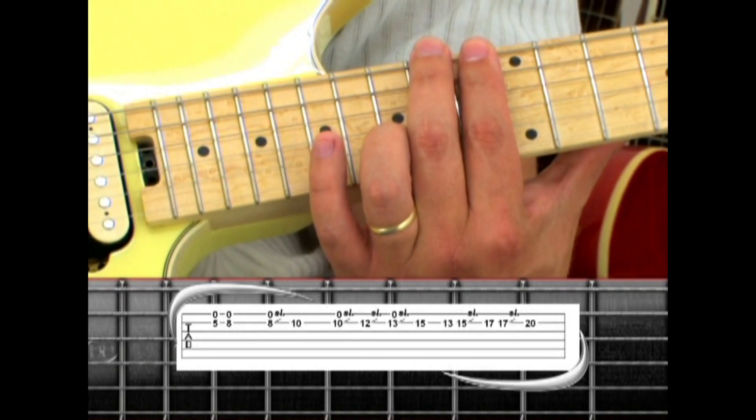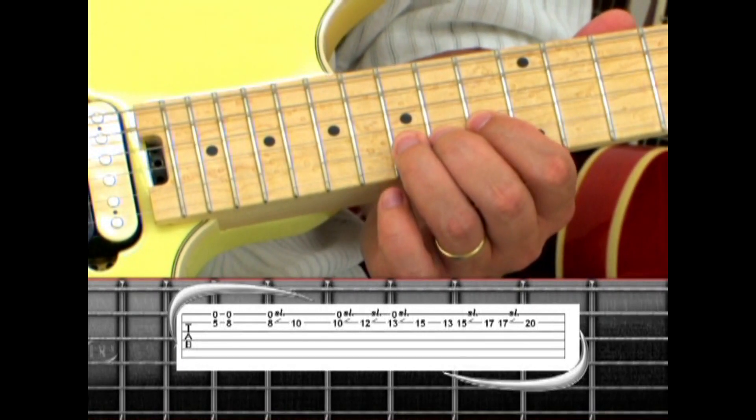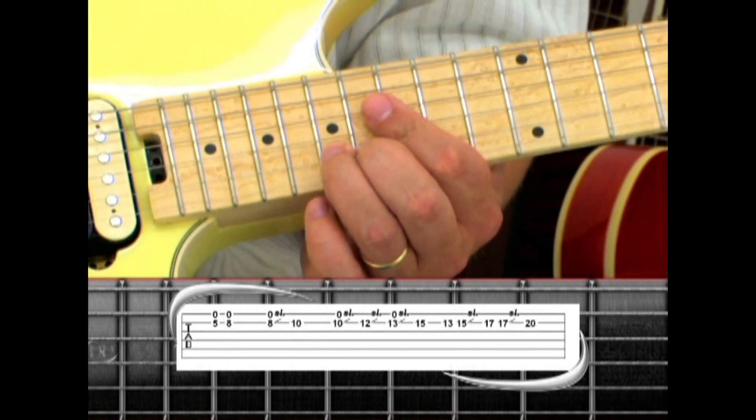Next is a group of single notes on the second string thirteen, then fifteen slide to seventeen. Seventeen slide to twenty.